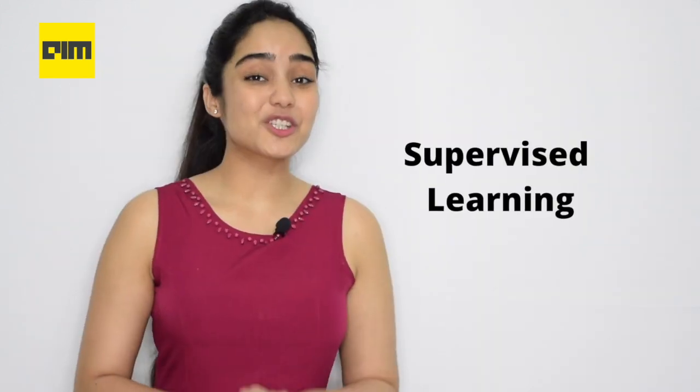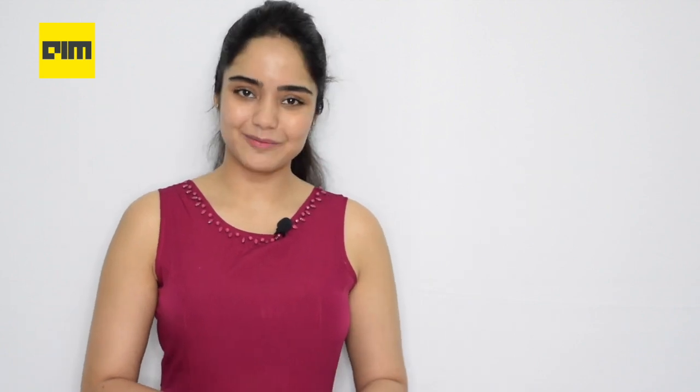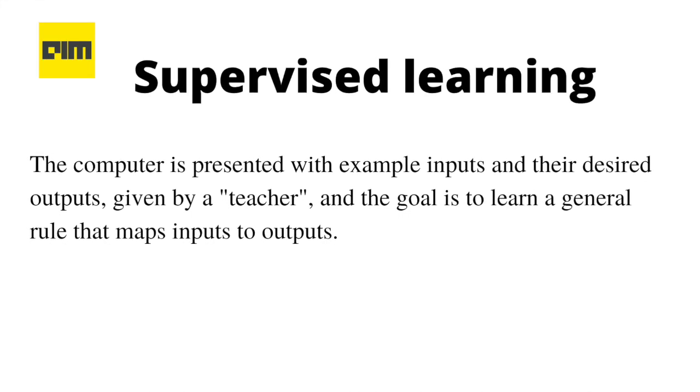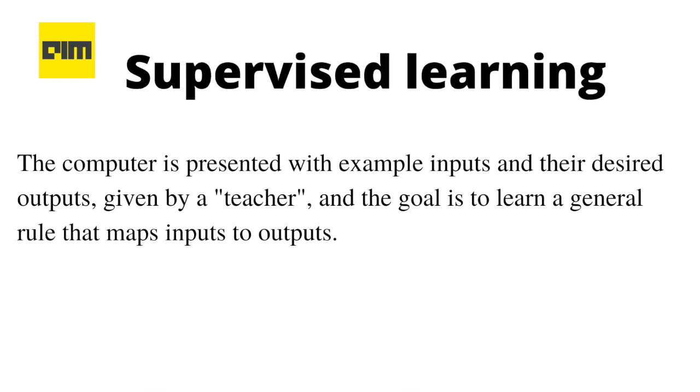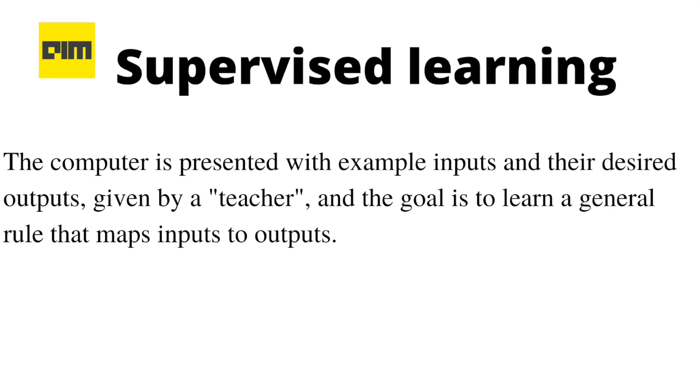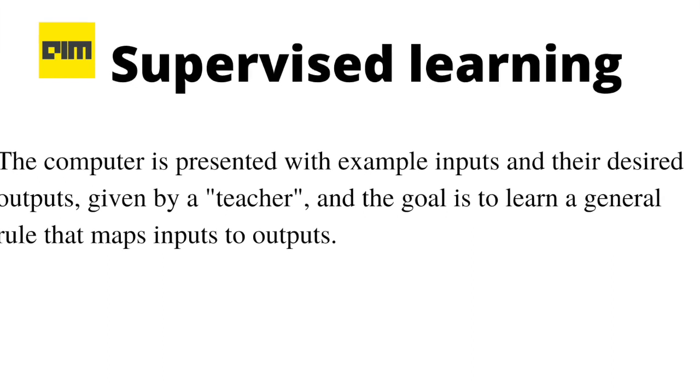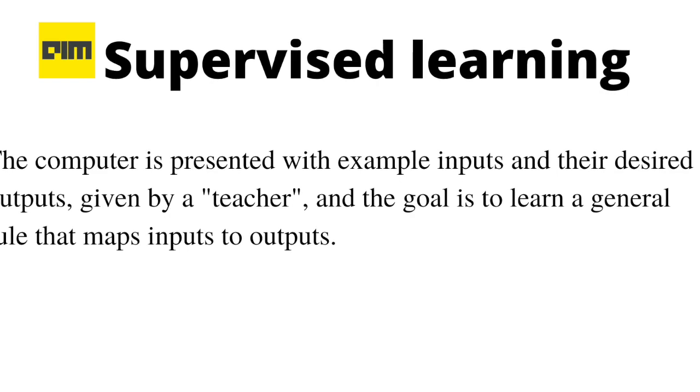Let's take a look at some of the machine learning approaches. Machine learning approaches are technically divided into three broad categories depending on the nature of the signal or feedback available to the learning system. The first one being supervised learning: the computer is presented with example inputs and their desired outputs given by a teacher, and the goal is to learn a general rule that maps inputs to outputs.